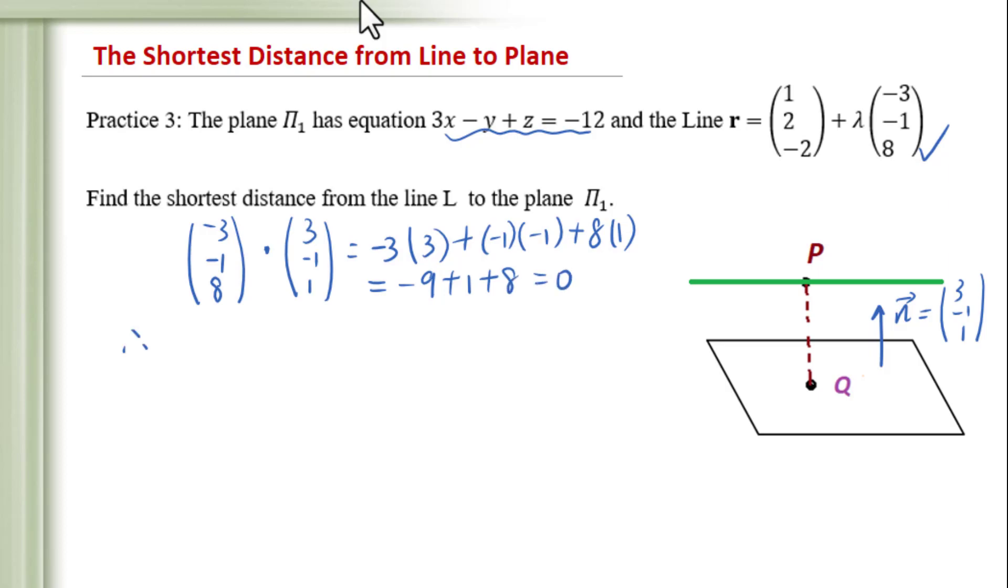So L is parallel to pi1. We will change this question into finding the shortest distance from a point P to the plane pi1. Let's use the position vector in the line L: P has coordinates (1, 2, -2).